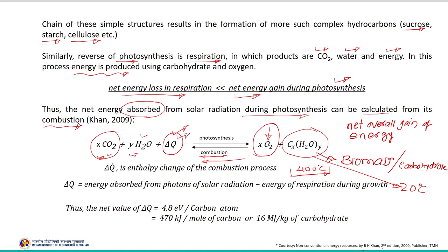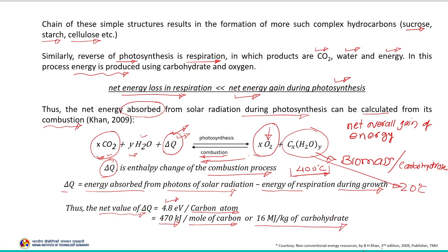Therefore, if we need to find out delta Q — the enthalpy change of this combustion or respiration process — it equals the energy absorbed from photons of solar radiation minus the energy of respiration during growth of the botanical biomass. This net value of delta Q is around 4.8 electron volts per carbon atom. Converting to per mole of carbon, the value is 470 kilojoules, and in terms of megajoules it is 16 megajoules per kg of carbohydrate, which is normally referred to as the heating value or calorific value of biomass.